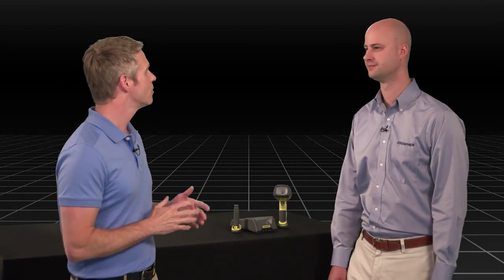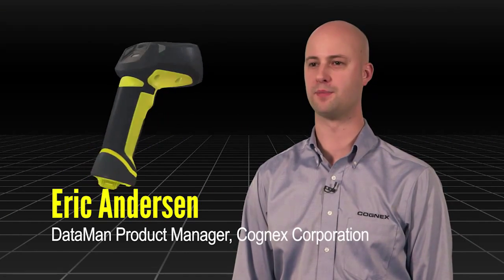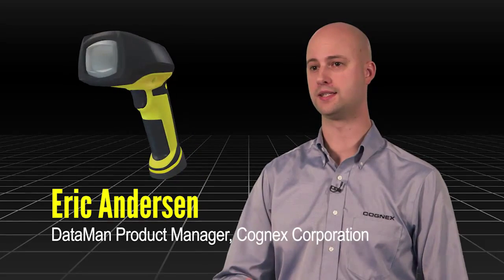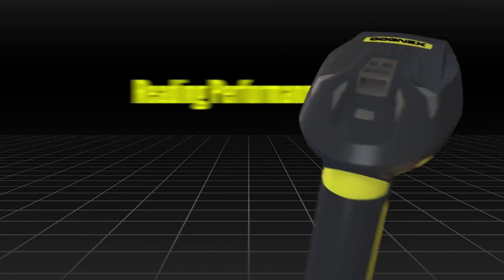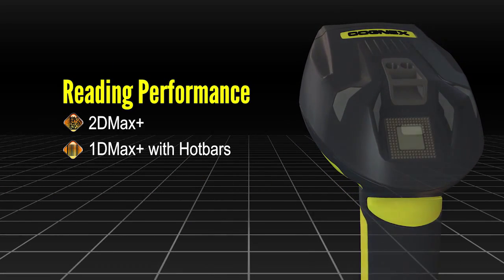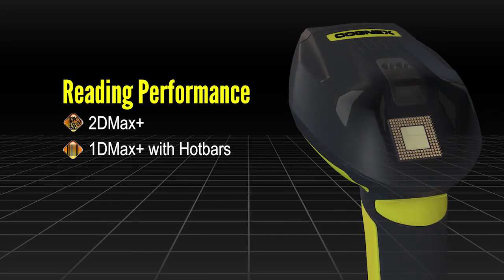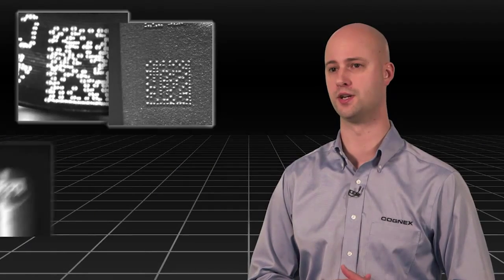So Eric, why is the 8600 able to read so well? Well, the most important thing is the type of algorithms. The 8600 features Cognex's best 2D Max Plus and 1D Max Plus with Hotbar's algorithms. That allows it to read the most challenging to read codes.